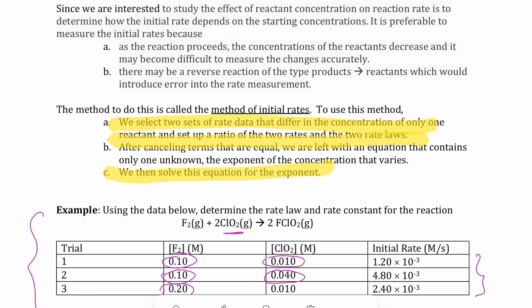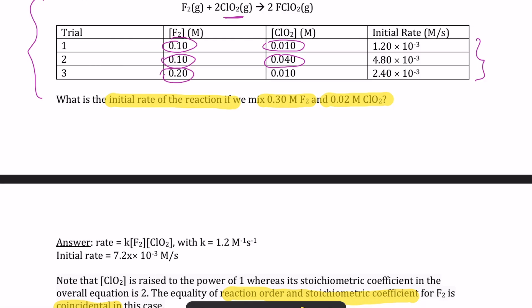It's important to note that reaction order and stoichiometric coefficients have no inherent relationship. In this case, F₂ has a stoichiometric coefficient of 1 and its order is also 1, but ClO₂ has a stoichiometric coefficient of 2 while its order is 1. The overall order of the reaction is 2 (1 + 1), but the order for each reactant must be determined experimentally.